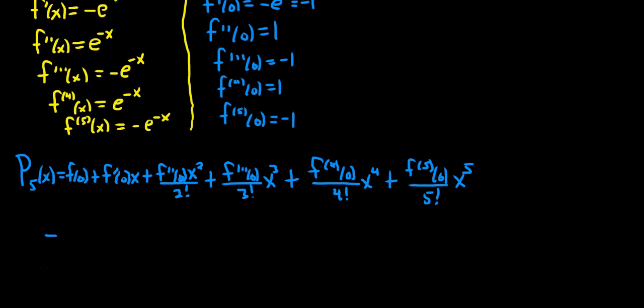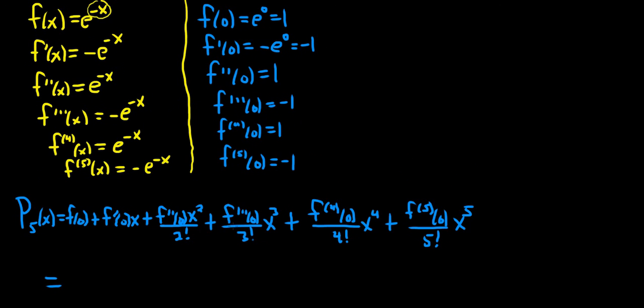So this is equal to, let's see, I scrolled up, so I can't see it. f of 0 is 1. So 1. And then minus, this is a minus 1 here. So it'll be minus x. The next one's a plus 1. So plus x squared, 2 factorial is 2. So x squared over 2.